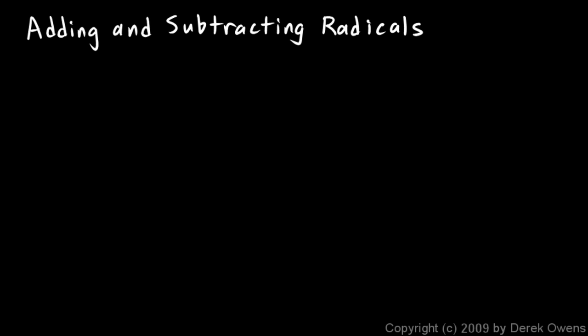The first example here is very easy: 3 times the square root of 7 plus 8 times the square root of 7. Just think 3 of these plus 8 of these will give me 11 of these. So my answer is 11 times the square root of 7. Pretty easy — just combine them because they're both square root of 7's, by adding the 3 and the 8.